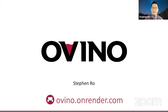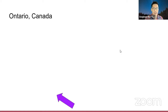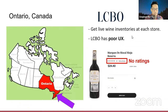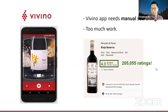Hi everyone, my name is Steven and I'm excited to show you my app called Ovino. Ovino is motivated by my desire to explore wine. I'm a Canadian from Toronto, Ontario, and I can see a live inventory of all alcohol throughout our entire province on one website, because all alcohol sales are completely managed by our government. Unfortunately, no one uses their website — this wine bottle has zero ratings and zero reviews. But on a popular wine app called Vivino, the same bottle has over 200,000 reviews. The setback is that I have to manually search for each bottle just to check their ratings, which is too much work. That's where Ovino comes in.